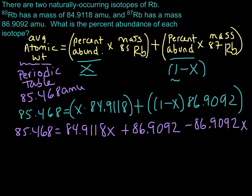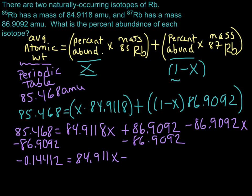So now let's continue to solve. So why don't we go ahead and move this guy over. So 86.9092, subtract that off, 86.9092, and we are going to end up with, so it's 85.468 minus 86.9092. So we end up with negative 1.4412, and that's going to be equal to 84.911x minus 86.9092x.